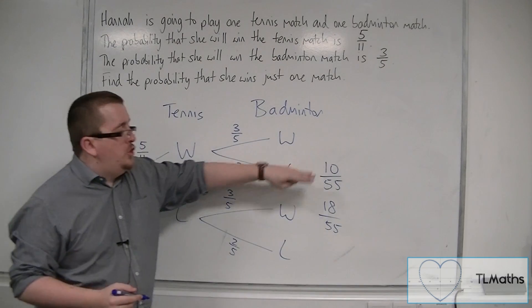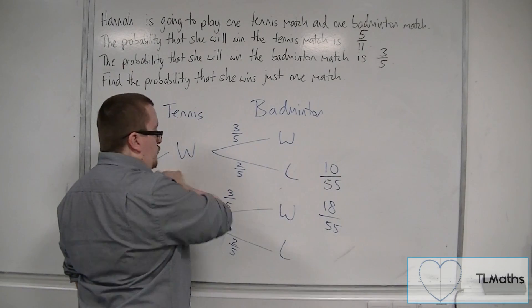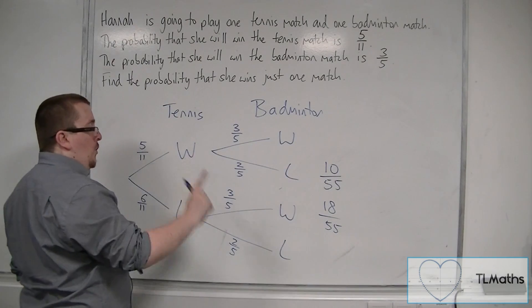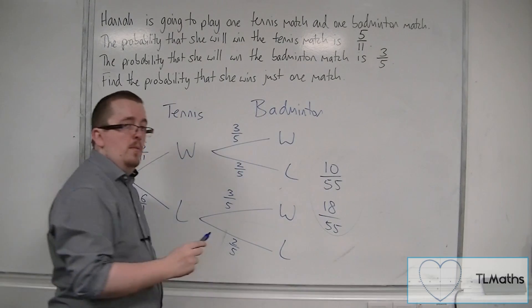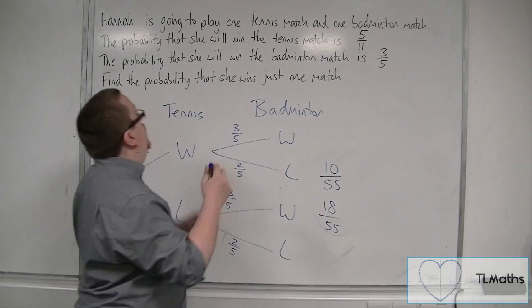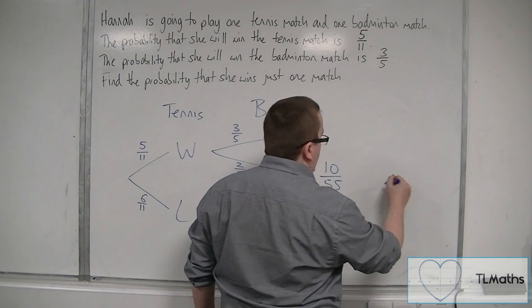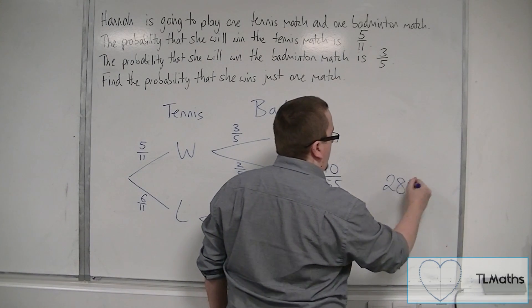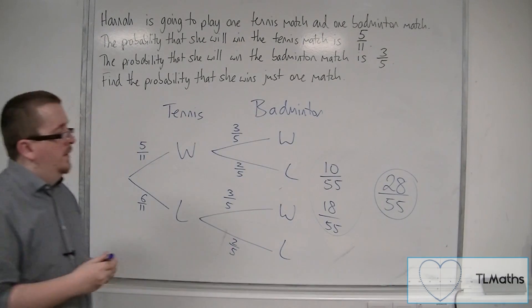Once you've got your scores there, it's either this route, win then lose, or lose then win. We must add these two probabilities together. The final probability of winning just one match will be 28 over 55. And that will be my answer.